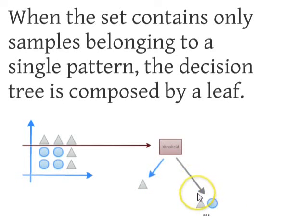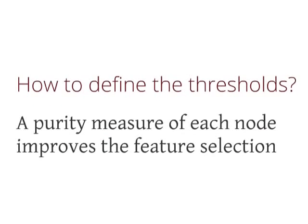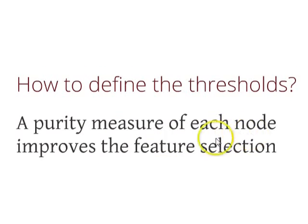The remaining patterns are left for a second test — a second threshold — which we will try to divide them with. But how do we define these thresholds? We need a purity measure of each node to improve the feature selection.